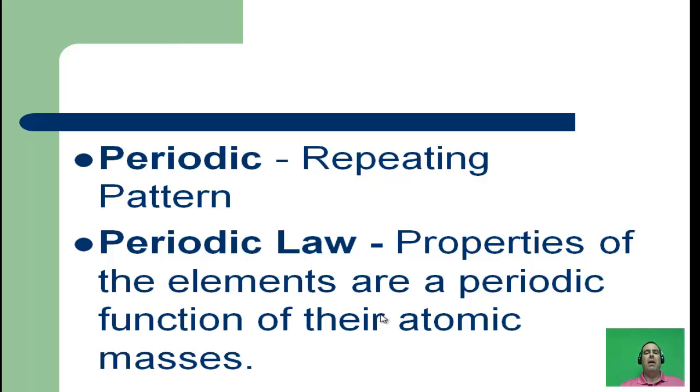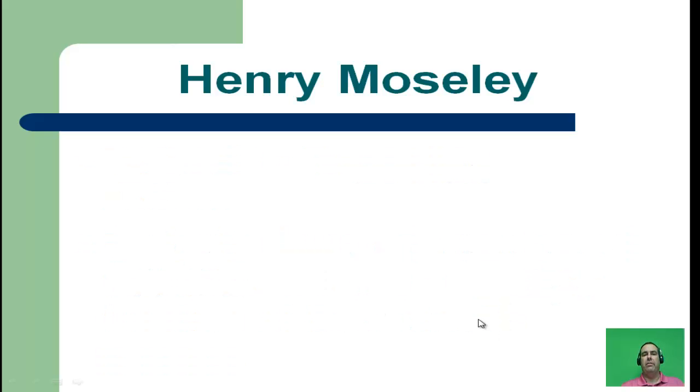Periodic law is just that: the properties of the elements are a periodic or repeating function when we organize them by atomic mass. He put his lightest element first and his heaviest element last. He said that the elements were going to have this repeating pattern when we organize them by their atomic masses.